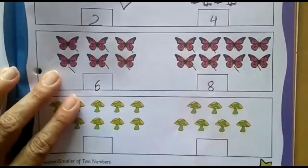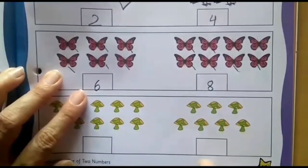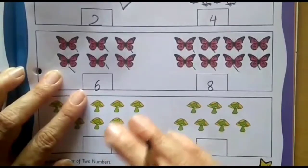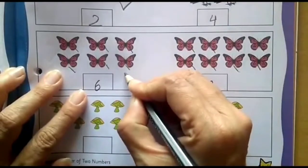Which set? This or this? Which number comes ahead before number 8? Number 6 is smaller. Because 6 comes first, then 7 and then 8. Right? So we have to put a tick mark here.